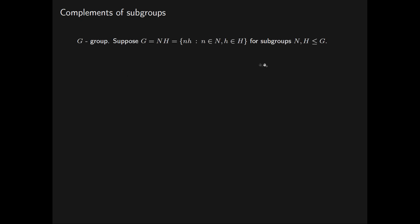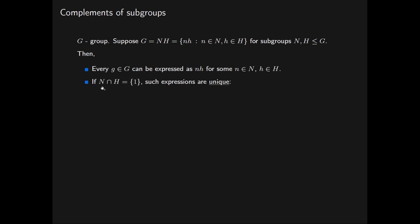To start with, let's consider complements of subgroups. If G is a group and we have subgroups N and H of G such that G is equal to their product as group subsets — so every element of G can be expressed as NH for some element N in subgroup N and element H in subgroup H — we then note that if the intersection of the subgroups N and H is trivial, equal to the subgroup of G consisting of only the identity element, then these expressions are unique.